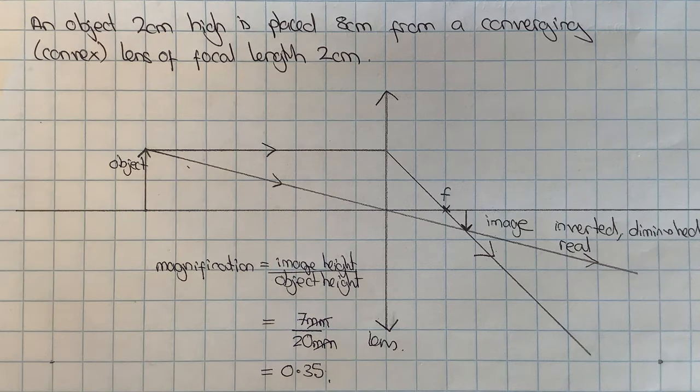So that's the basic ray diagram for a converging lens. I hope you found this video useful.